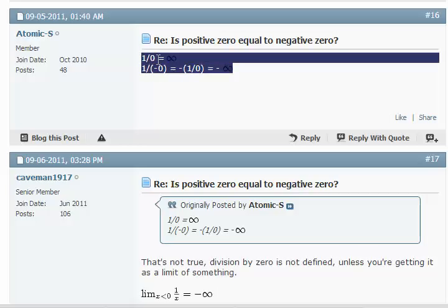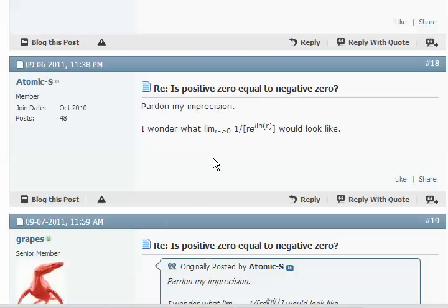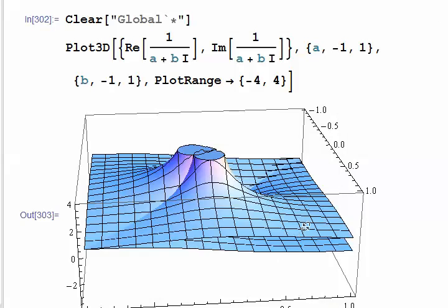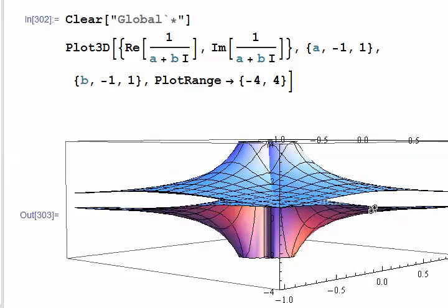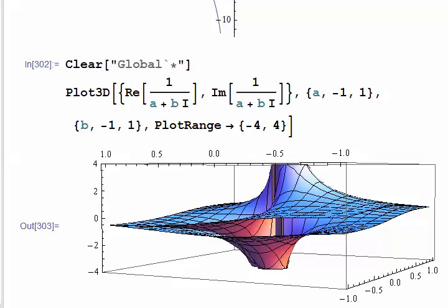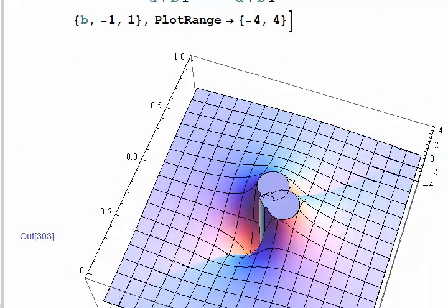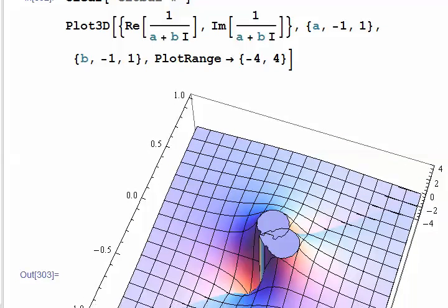I see AtomicS agrees with me. Caveman does not agree with me. AtomicS asks the question that got me started writing this video, but I got started wondering about the question of, or more started thinking about the question of whether 0 was equal to negative 0 that I didn't get to it. And this video is already almost 18 minutes long so I think I'm going to stop here and save that for another video.